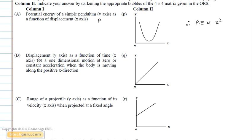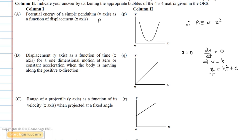Now let us have a look at question B: displacement as a function of time for a one-dimensional motion at zero or constant acceleration when the body is moving along the positive x direction. First, considering acceleration equal to zero, the velocity of the object will be constant. Hence, the displacement will be equal to KT plus C, where K and C are constants. The displacement is directly proportional to time, and since displacement is on the y-axis and time on the x-axis, graph Q satisfies question B.